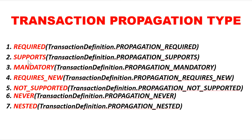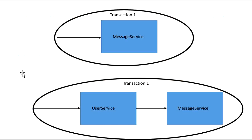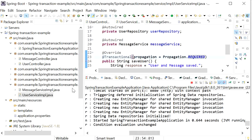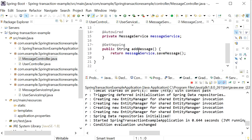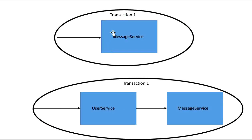The second type of propagation level is SUPPORTS. If the called method has propagation SUPPORTS and there is no existing transaction, it will not create a new transaction. But if the calling user service layer has declared a transaction, the message service will use it.